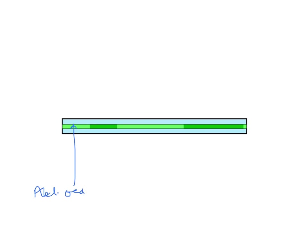This light green area over here represents the small part of the abdominal esophagus. We're only talking about four centimeters or so of length, and it also represents the stomach. The next darker green bit over here is going to be the duodenum.